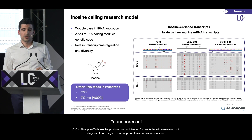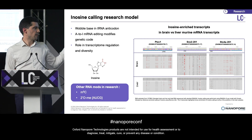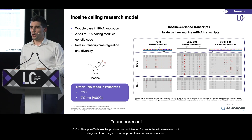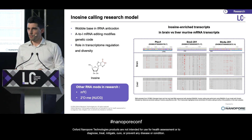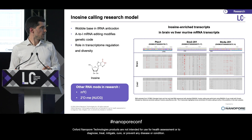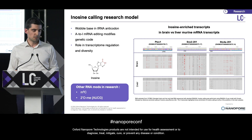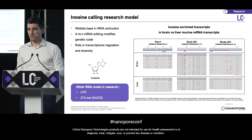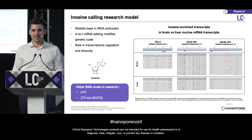Two other types of modifications we're working on at the moment: m5C has been requested by many people in the community, so it's definitely on the list, as well as 2'-O-methylation. With those modifications, we should actually cover a large amount of the community's interests — but it's not limited to that; we can probably do a lot more. Maybe not all 200-plus RNA modifications, but probably a good chunk of them.